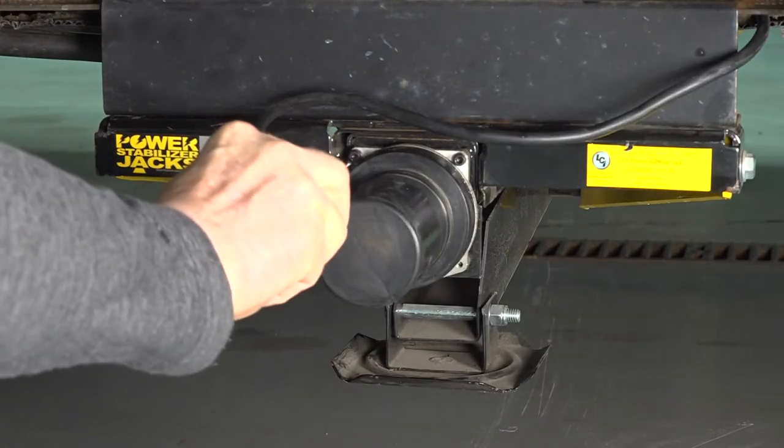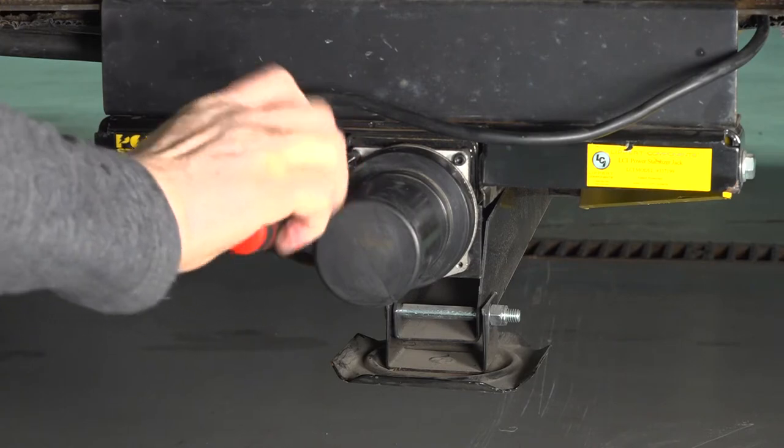Using a number 4 hex bit, remove the two hex screws on the exterior of the motor.